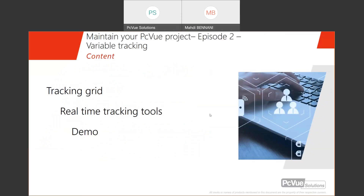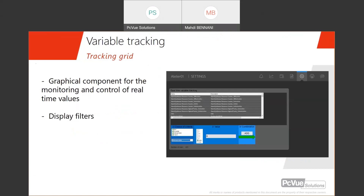So let's get started with variable tracking. I'm going to introduce it with two or three slides, and then I'll let Maddie show us with a real project how it works. Basically, you have several tools available in PC View — you have the tracking grid and some real-time tracking tools. The tracking grid is a built-in component in PC View, mainly designed to display any kind of data, with a specific option dedicated to displaying the whole list of variables in your project.